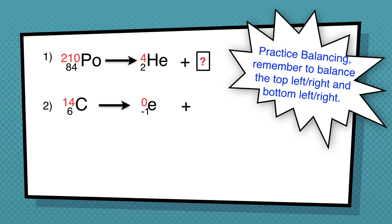For the second example, carbon-14 gives off a beta particle — 0, negative 1, E — like an electron. Remember that you have to balance the top left to right, and then the bottom left to right. This one is a little tricky because on the right we have a negative 1, so what plus a negative 1 gives you 6? Go ahead and come up with an answer.